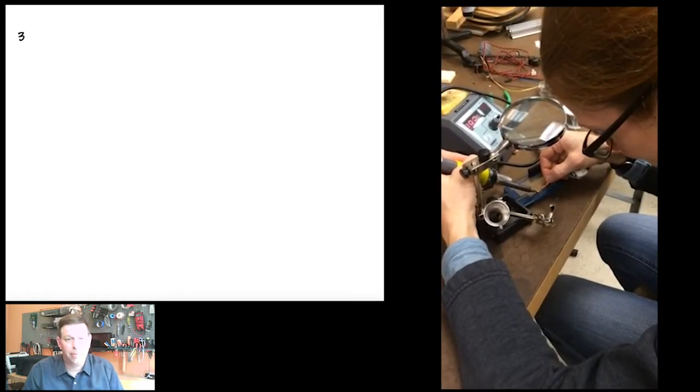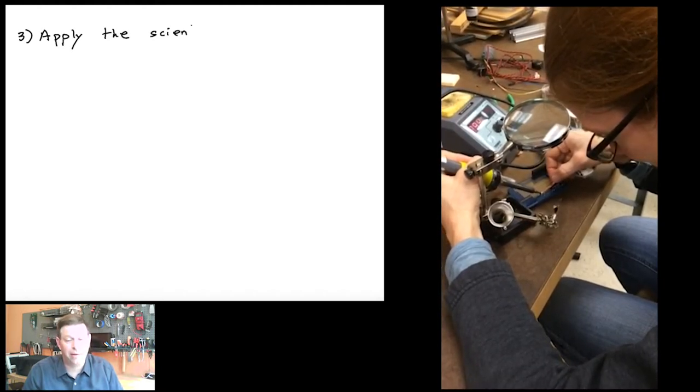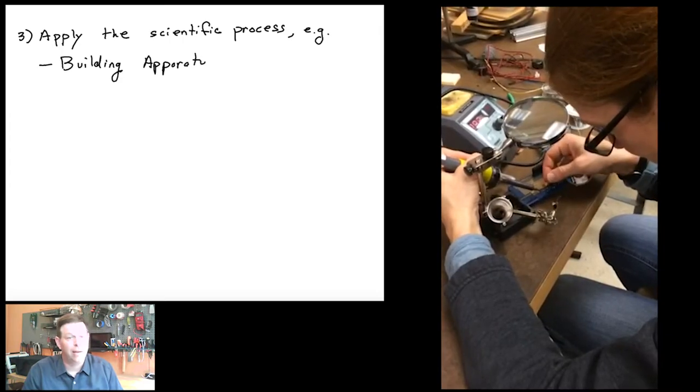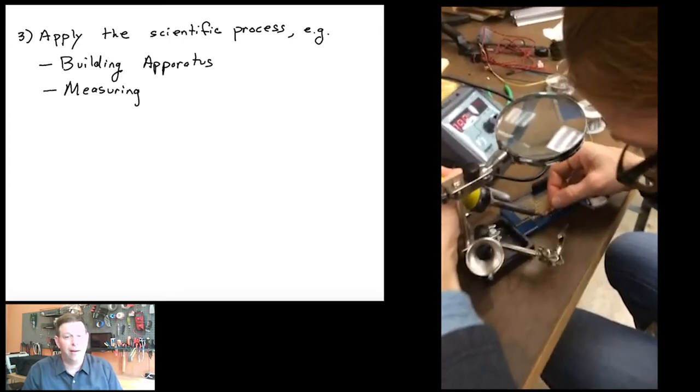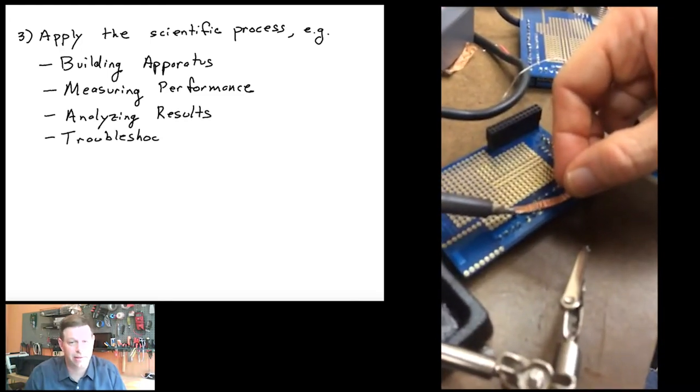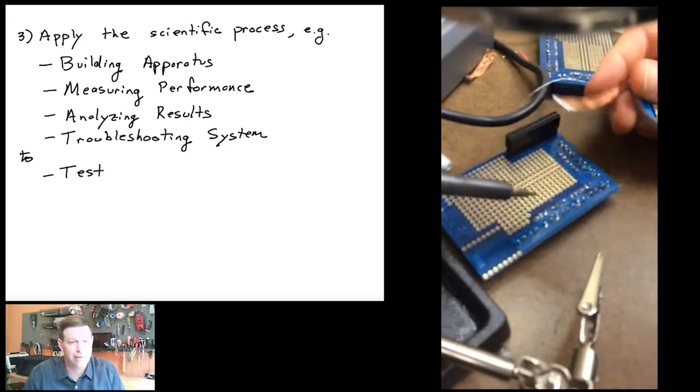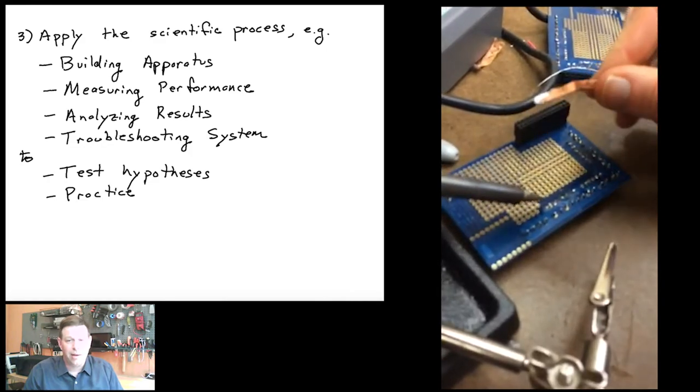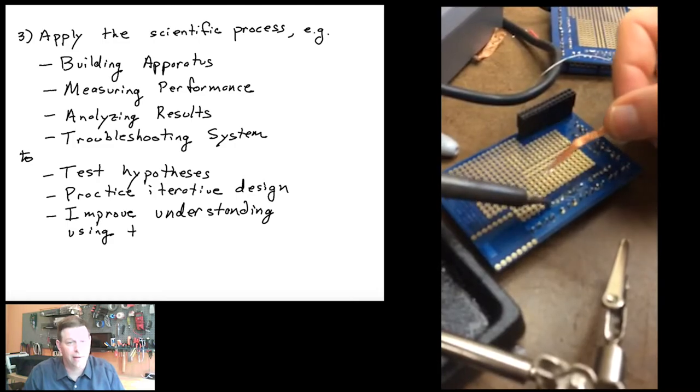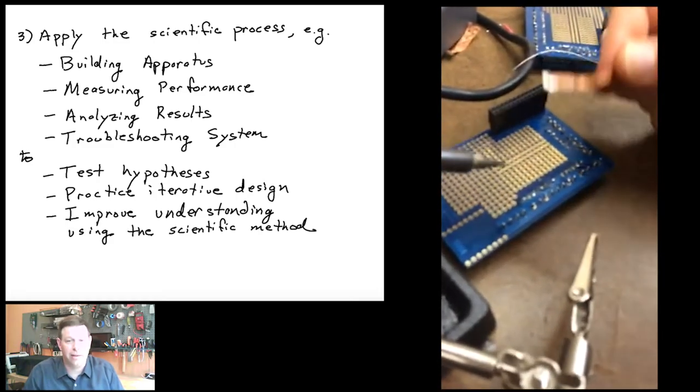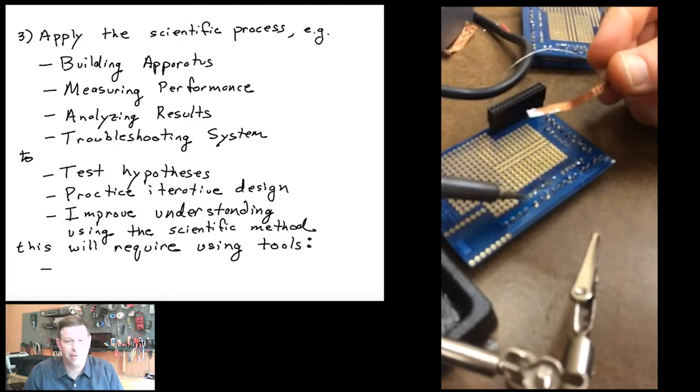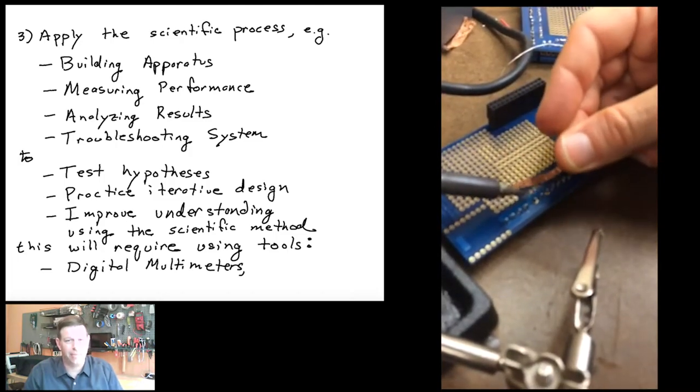Third, we'll be practicing applying the scientific process in this class by building apparatus, measuring their performance, analyzing results, and very importantly, we'll learn properly troubleshooting a system so we can test hypotheses about how things work, practice the process of iterative design, and improve our understanding of the world using the scientific method. This, of course, requires using lots of tools, multimeters, breadboards, and soldering among them.